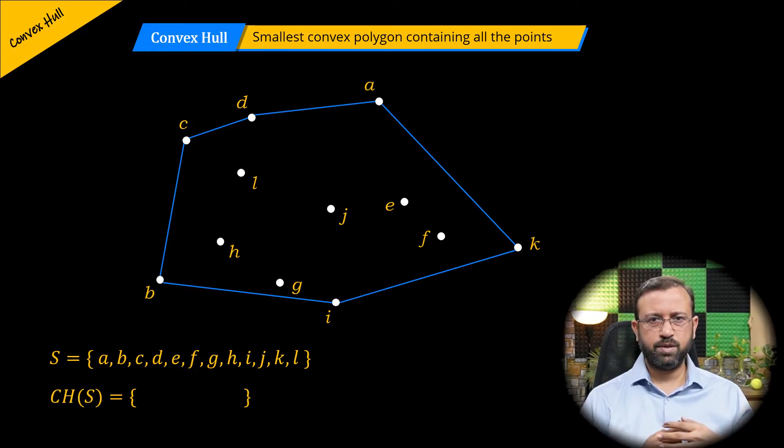In this example, the convex hull of S is the points B, I, K, A, D, and C.